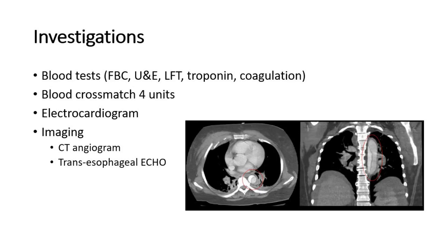For investigations, baseline blood tests such as full blood count, urea and electrolytes, liver function test, troponin, and coagulation should be performed, with at least 4 units of packed red blood cells cross-matched. An ECG should also be performed to exclude any cardiac pathology. For imaging, a computed tomography angiogram is recommended to diagnose acute aortic syndrome as first-line imaging. An alternative is transesophageal echo. This picture is a CT scan showing a Stanford-type B aortic dissection.